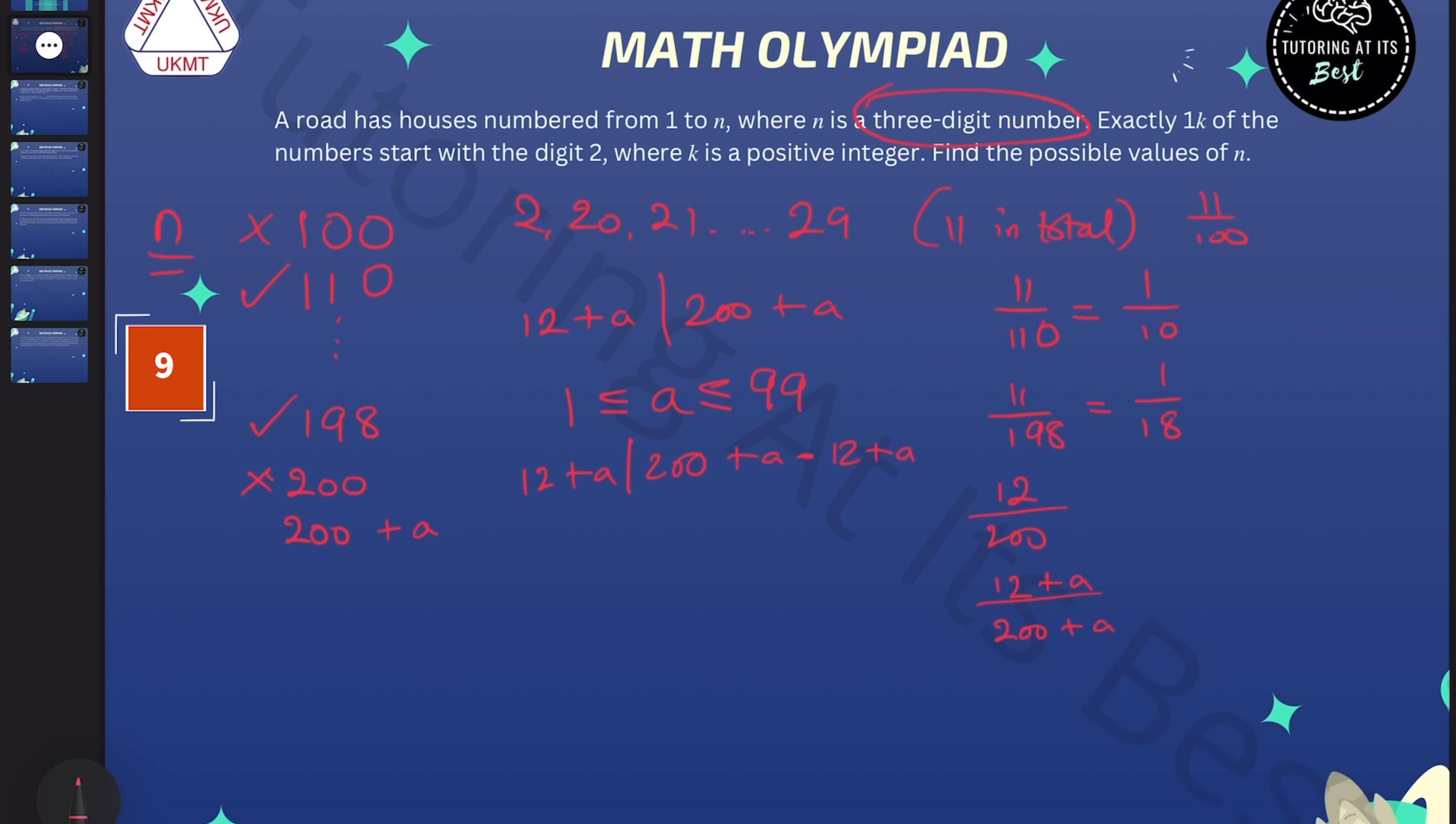So I'm just going to rewrite that as 12 plus a divides 200 plus a minus 12 plus a. That means that we'll have 12 plus a dividing into 188. And that has a limited number of factors, which is going to be 2 squared times 47. So we now know that 12 plus a cannot equal 1, 2 or 4, but it can equal 47, or if we double it, 94.